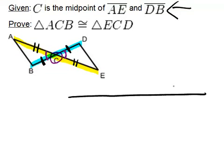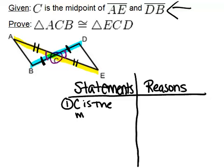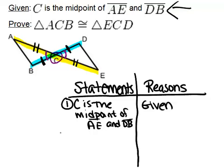In a two column proof remember you set it up by making your two columns. On the left are statements and on the right are going to be reasons. And you always start with the given information and number each step to keep it organized. So the only thing that we were given was that C is the midpoint of AE and DB. And we know this. We can write it in our proof because it was given information.